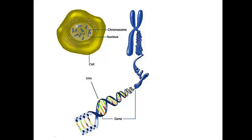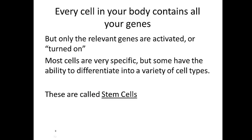Every cell in your body contains all of your genes. For example, cells in your eye have the genes for making insulin, which is something your pancreas does. So why doesn't your eye make insulin? Well, the genes are there, but they're not activated — they're not turned on.